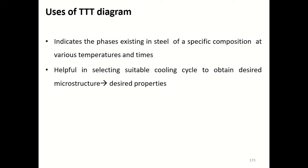Good morning. In the last session we discussed the time-temperature transformation diagram. This diagram represents the time and temperature dependence of the austenite to pearlite transformation. In addition to pearlite, if you cool down to lower temperatures, another phase called bainite is formed, and if you quench to a very low temperature, another phase called martensite is formed.